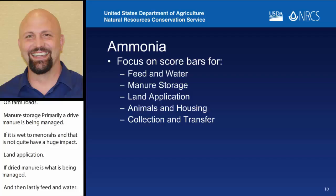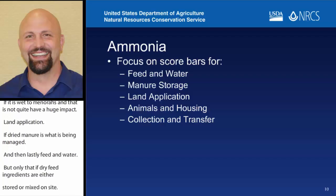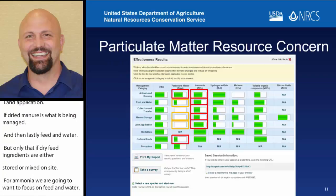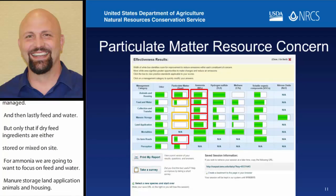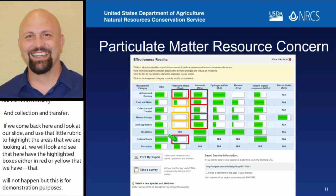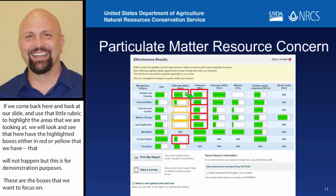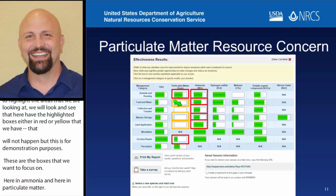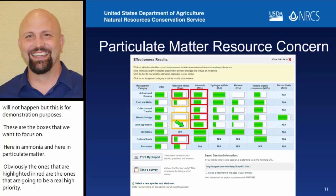For ammonia, we're going to want to focus on feed and water, manure storage, land application, animals and housing, and collection and transfer. If we come back and look at our slide and use that rubric to highlight the areas we're looking at, we'll see the highlighted boxes — either in red or in yellow — for demonstration purposes only. The ones highlighted in red are going to be our real high priorities. The ones highlighted in yellow are ones we'll probably want to go back to as a secondary concern, particularly if they have a really low score — almost completely white boxes showing a huge amount of potential for improvement.